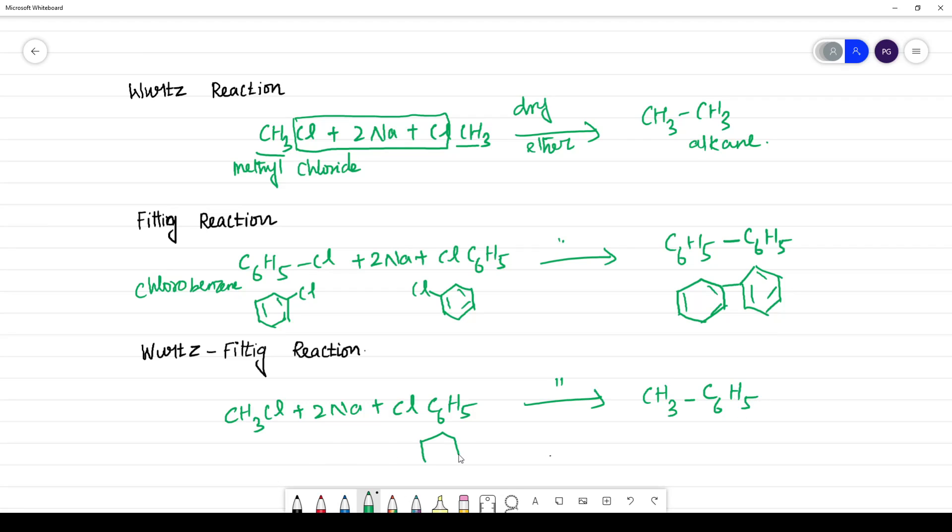That means if you have C6H5Cl, the product will be CH3-C6H5. What is this? This is toluene.